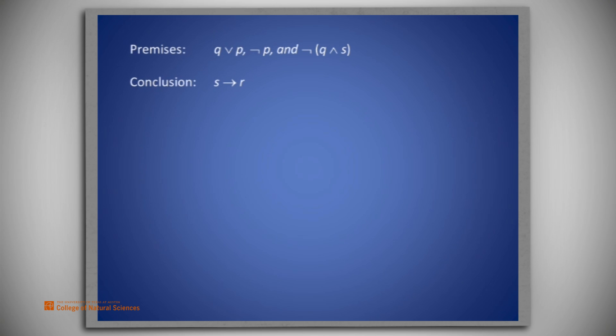The premises that we will be allowed to use are the three premises that are given together with the conditional premise S. From the first two premises, we see that since at least one of Q or P must be true, and P must be false, then Q must be true.